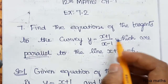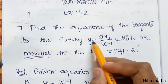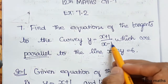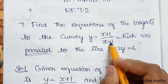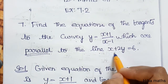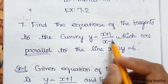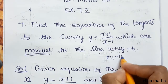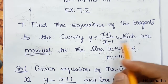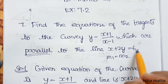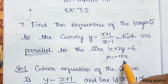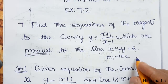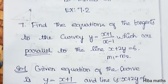So let's take the equation of the tangent. The curve is y equal to (x+1)/(x-1) and the line x plus 2y equal to 6 is parallel to the tangent. If they are parallel, the slopes will be equal. The slope of the curve and the slope of the line will be equal. We will take a point using slope m1.